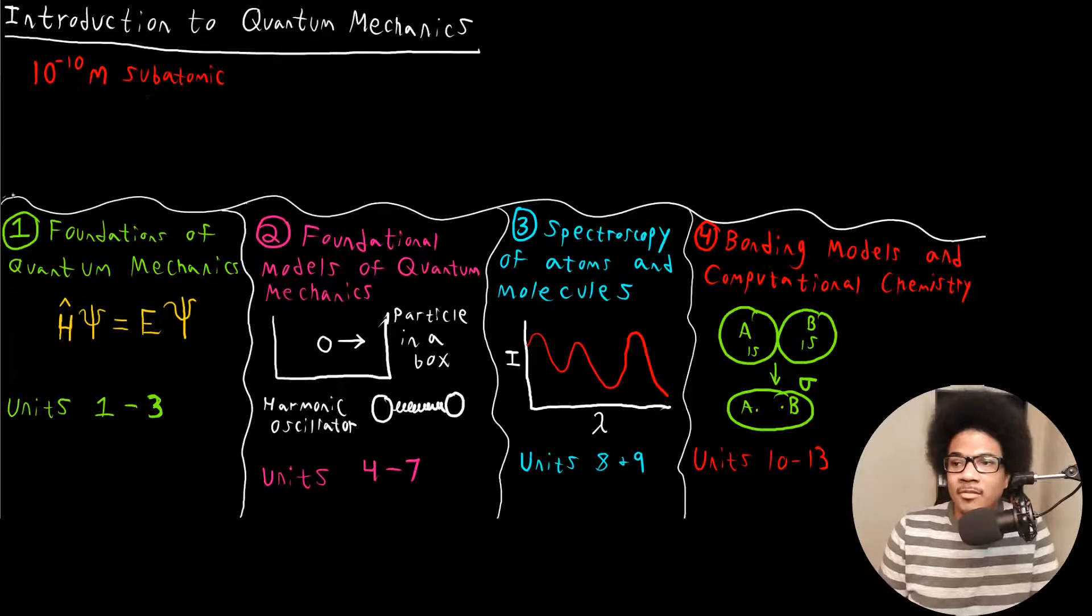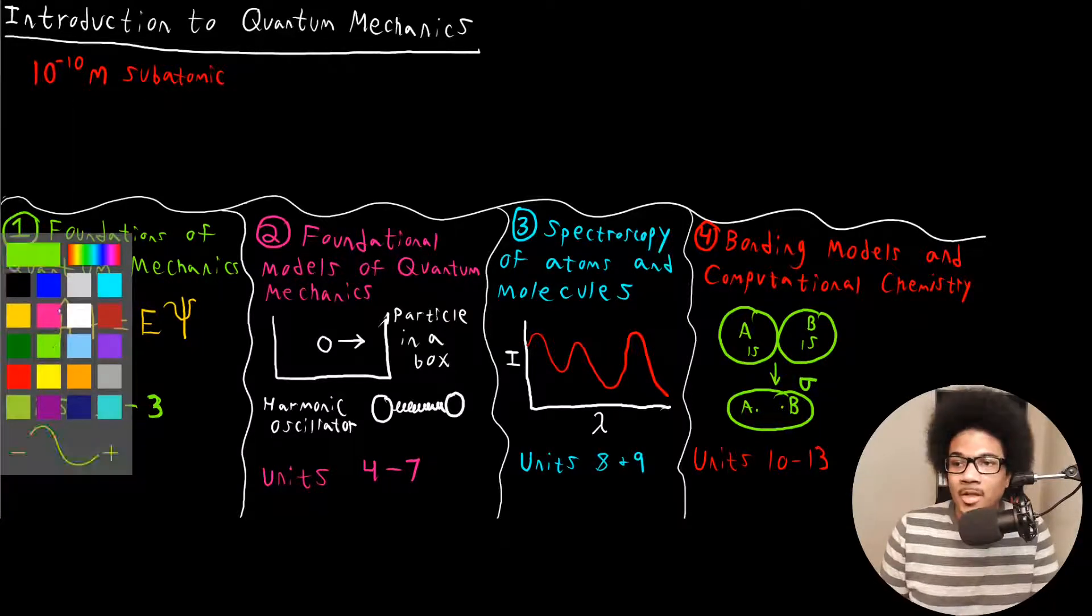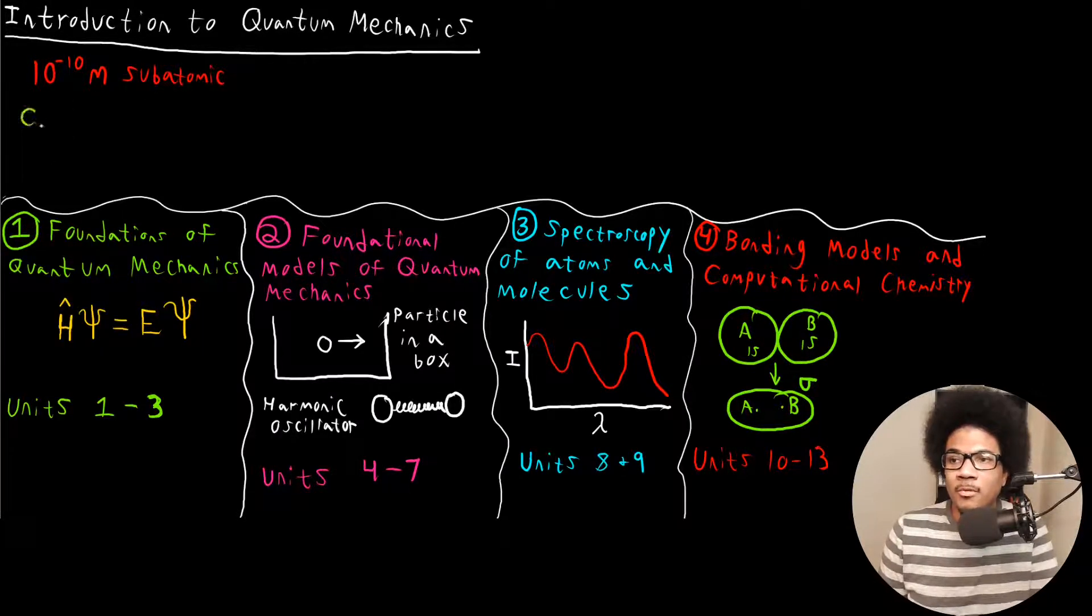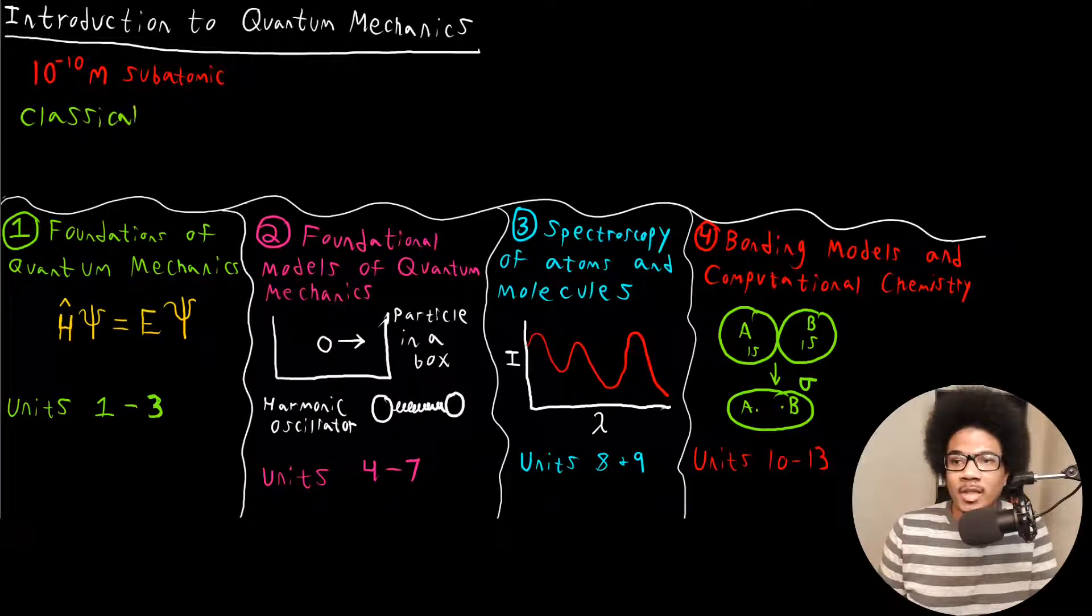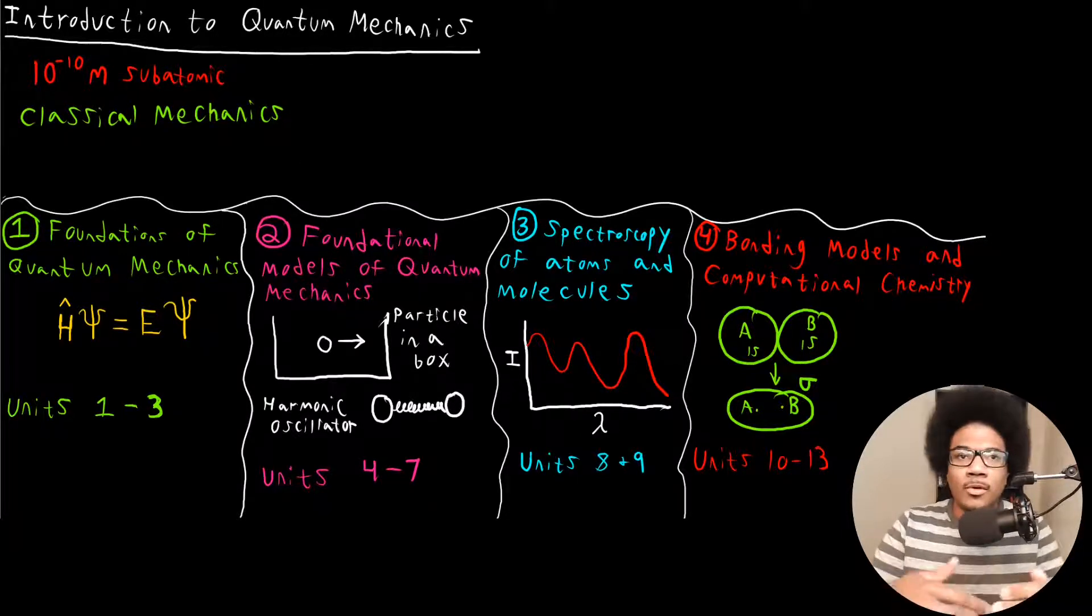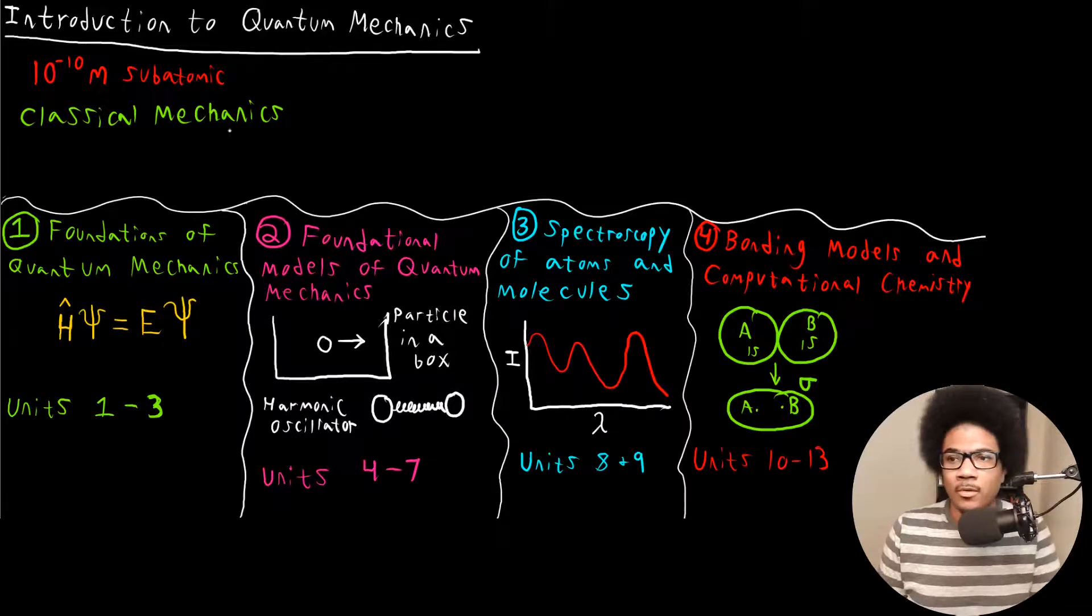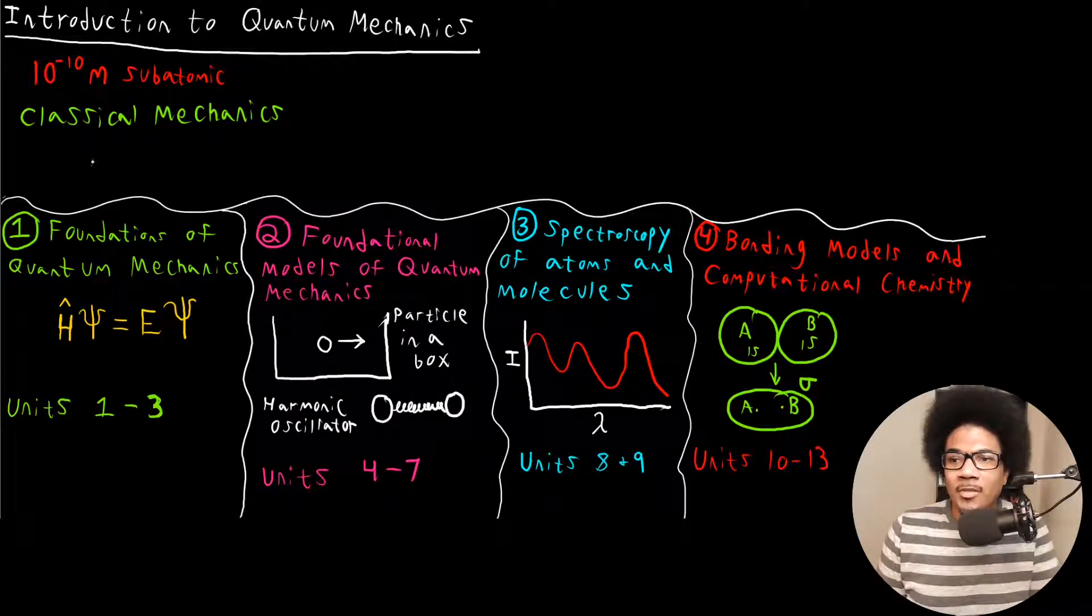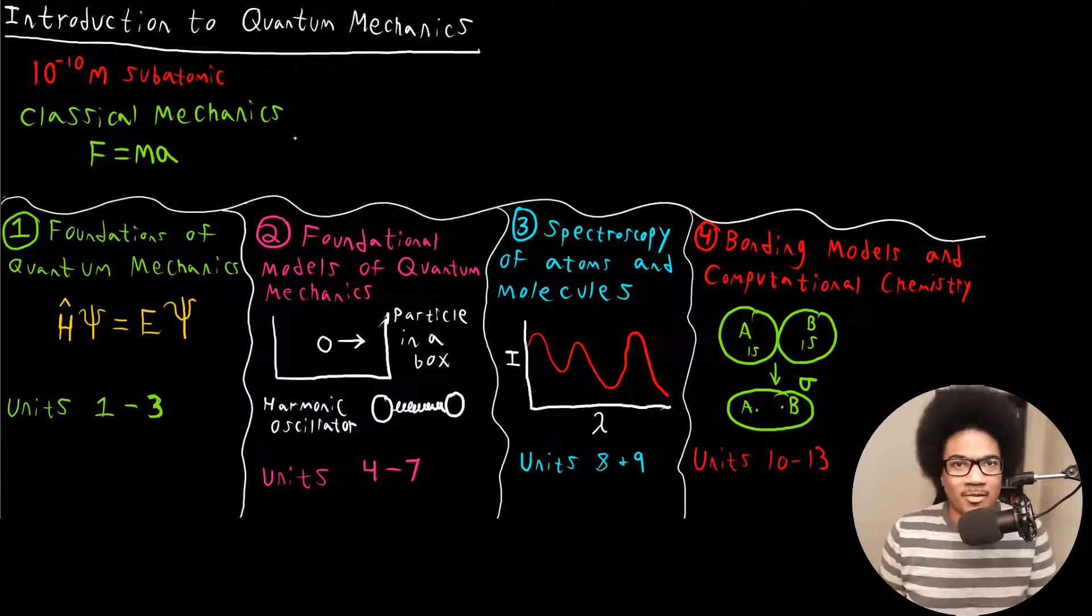This is in contrast to the classical mechanics that you've probably learned before. Classical mechanics is just the general physics that you've probably learned in any college-level introductory physics course. This is anything dealing with Newton's F equals MA equation.